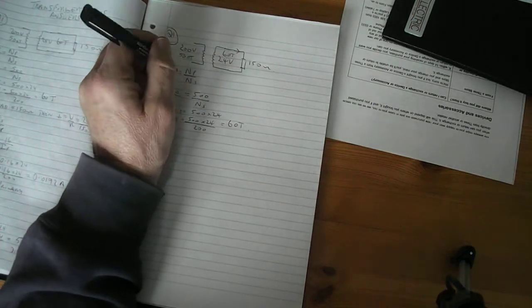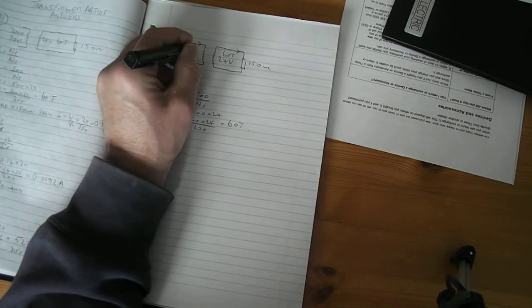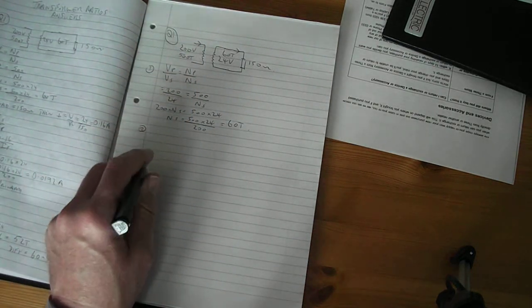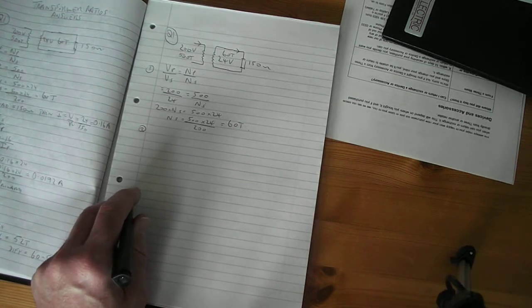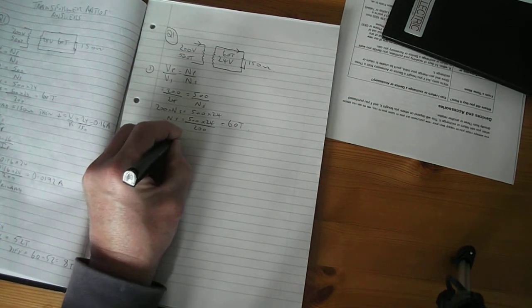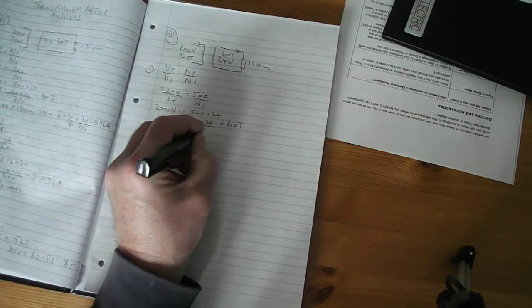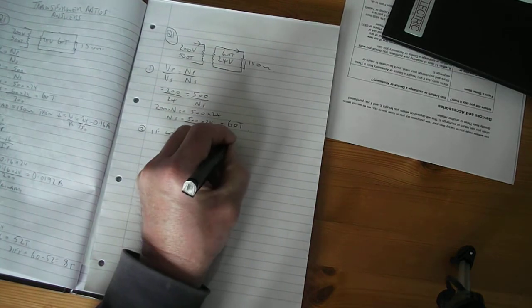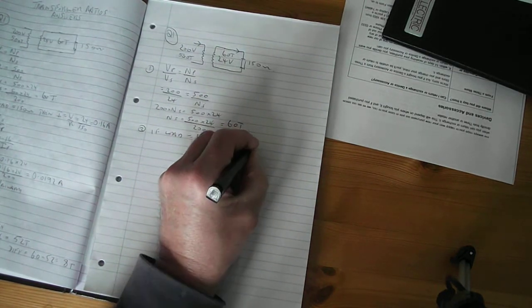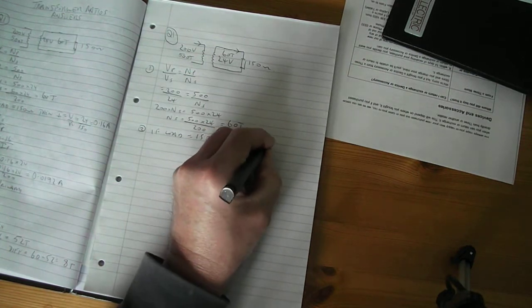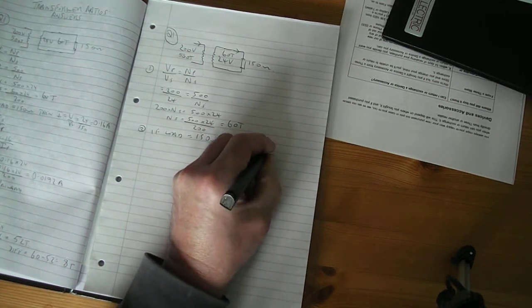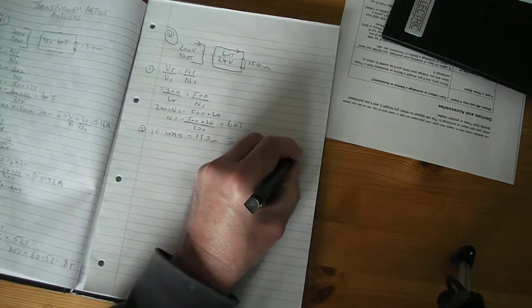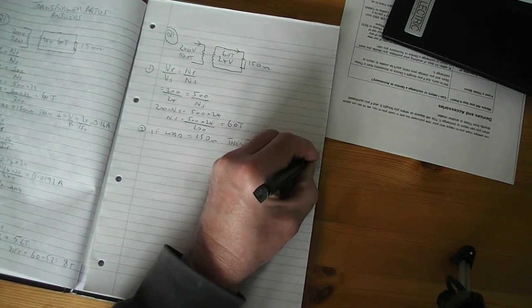Some current is now going to flow around that secondary. And because this is a step down transformer, the current in this primary will be less than the current in the secondary. So let's have a look at that. The formula you're going to use, if the load is 150 ohms, then I secondary equals V secondary over R equals 24 divided by 150 equals 0.16 amps.